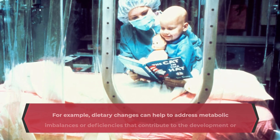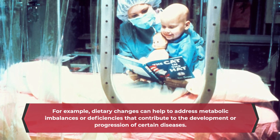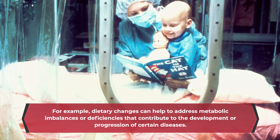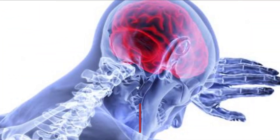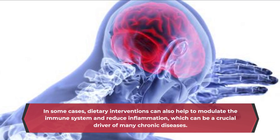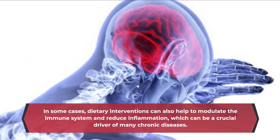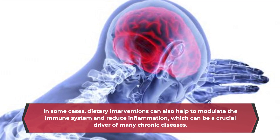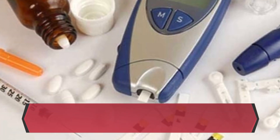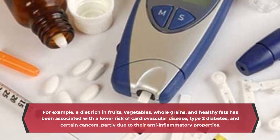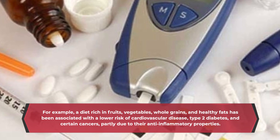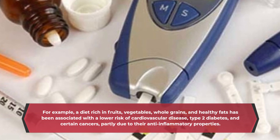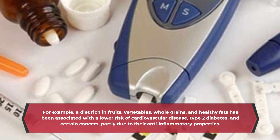For example, dietary changes can help to address metabolic imbalances or deficiencies that contribute to the development or progression of certain diseases. In some cases, dietary interventions can also help to modulate the immune system and reduce inflammation, which can be a crucial driver of many chronic diseases. For example, a diet rich in fruits, vegetables, whole grains, and healthy fats has been associated with a lower risk of cardiovascular disease, type 2 diabetes, and certain cancers, partly due to their anti-inflammatory properties.